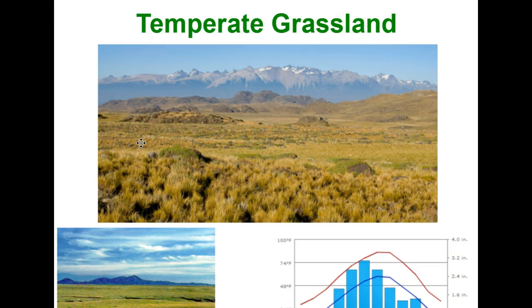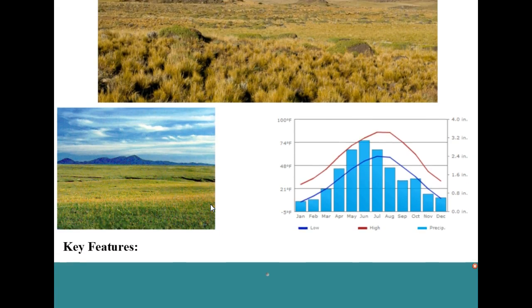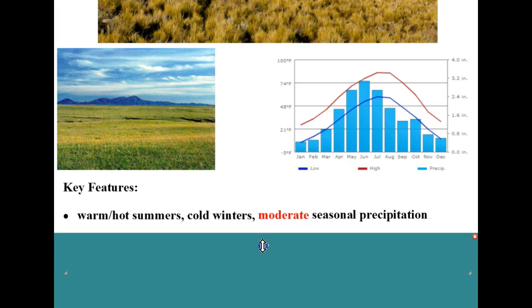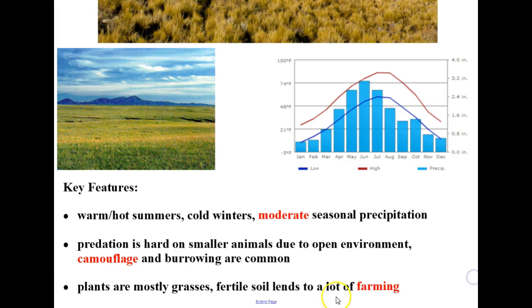Next is temperate grassland. Key features are warm to hot summers, cold winters, and moderate seasonal precipitation. Predation is hard on animals in this biome, so many adapt by having camouflage and burrowing. The plants, as the name indicates, are mostly grasses, and the fertile soils lend themselves to a lot of farming and agriculture.